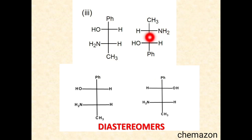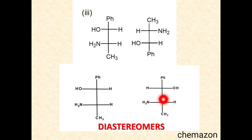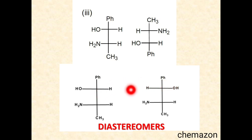In the third set, rotating the second molecule 180 degrees in plane, you can see that at the second carbon the configuration is reversed whereas at the third carbon it is exactly the same. There are two chiral centers, of which one is the same and one is changed. As discussed previously, these types of molecules are called diastereomers.